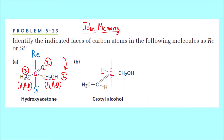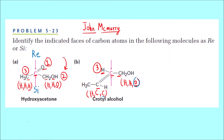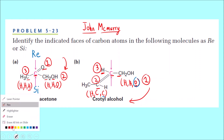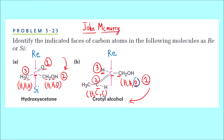Similarly for the second carbon we assign priority: hydrogen, carbon, carbon. Hydrogen gets third priority. One carbon is attached to hydrogen, hydrogen, and oxygen; the other (sp2, double bond counted as carbon) is attached to hydrogen, carbon, carbon. Oxygen outranks carbon, so the oxygen-bearing carbon gets first priority, the other carbon gets second. From 1 to 2 to 3 it is clockwise, so the top face is re and the bottom face is si.